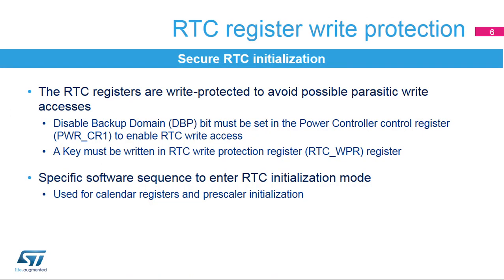The RTC is initialized using a secure method. The RTC registers are write-protected to avoid any possible parasitic write accesses. First, the disable backup domain protection bit must be set in the power controller control register in order to enable RTC write accesses. Then, a specific sequence must be written in the RTC write protection register.